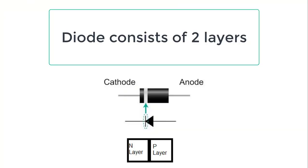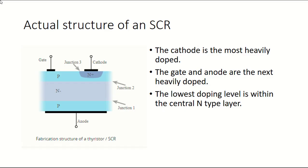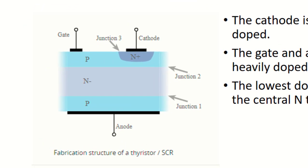As you know, a diode consists of two layers, P and N, while transistors consist of three layers, either PNP or NPN. On the other hand, the actual structure of an SCR, which is a silicon controlled rectifier also known as a thyristor, consists of four layers: PNPN.